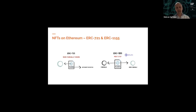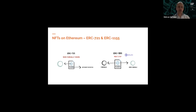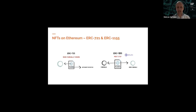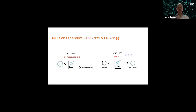ERC1155, on the other hand, is the next evolution in the creation of NFTs. This standard allows for creating contracts that support both fungible and non-fungible tokens. It was created by a blockchain-based gaming platform known as Enjin. In many games such as World of Warcraft, a player can hold both non-fungible items — swords, shields, armors — and fungible items such as gold or arrows.